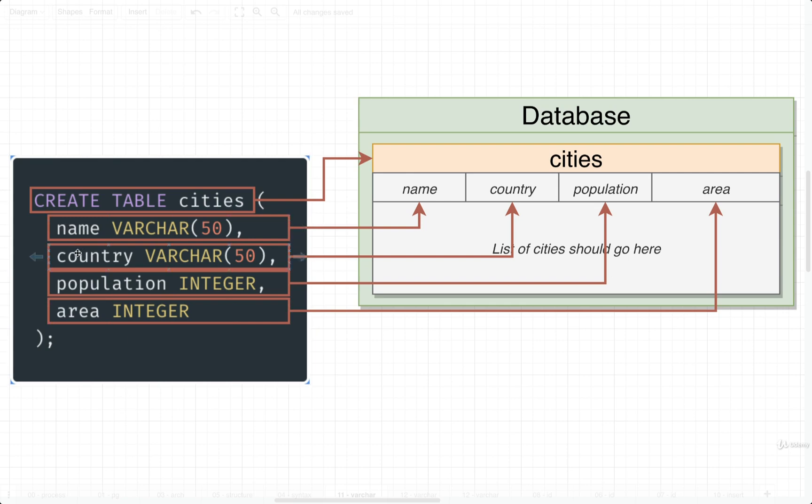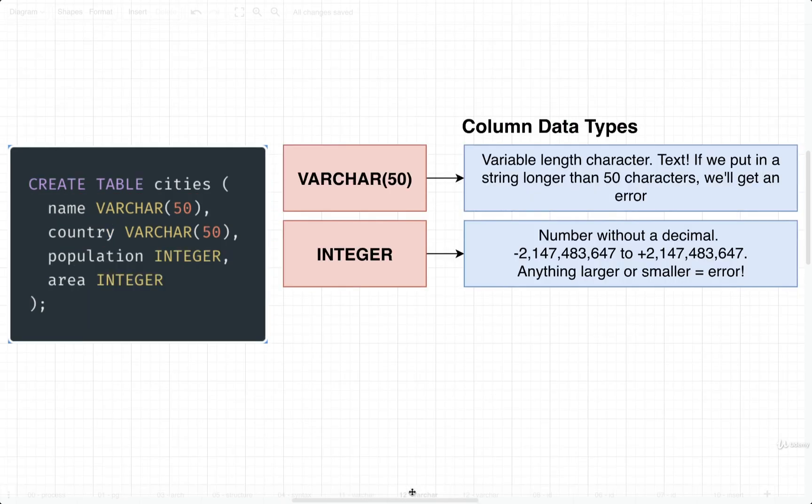So we said that name and country were going to contain data of type varchar50, and population and area would contain data of type integer. So what exactly is a varchar50, or an integer? Well, these are two examples of column data types.